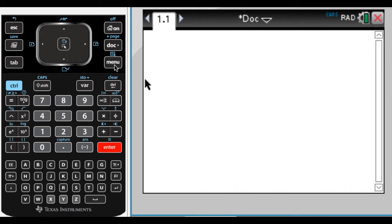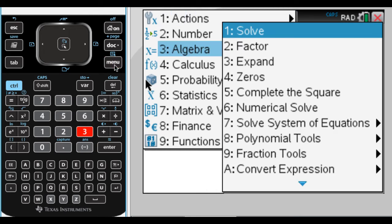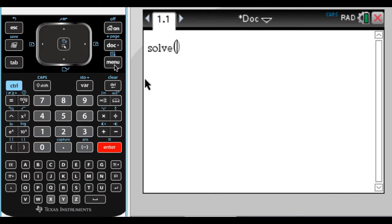So solve is no different for trig equations. You just go to menu and then option three, and option one is solve. So hopefully you've done this a lot since you got your calculator. So solve, and let's say we want to solve sine of x equals the square root of three over two. So this is something you could probably solve in your head, but we're going to do it on the calculator. So I put comma x to tell it what to solve for, and then I'm going to hit enter.